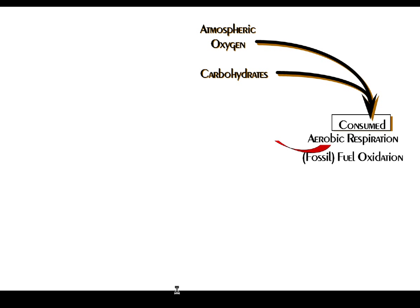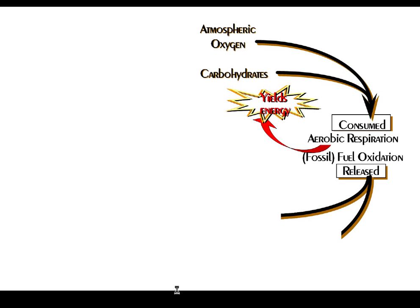When something is burned — for instance, your average piece of coal, some oil, or a log — that's also oxidation. The coal, oil, and natural gas — fossil fuels — will be fossil fuel oxidation. They yield energy. So we have something in common with the average lump of coal. What is released from that process is some water and some CO2, carbon dioxide.